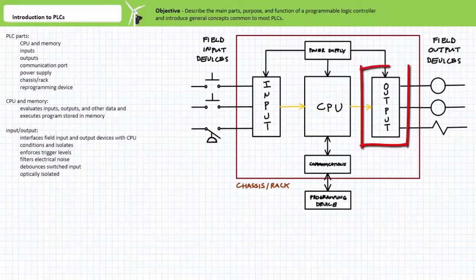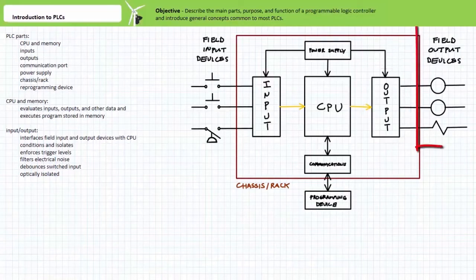The output is just the opposite. It is the interface between the PLC and field output devices like the coils of contactors or solenoid operated hydraulic valves. The output conditions and isolates the output signals from the input and internal signals.